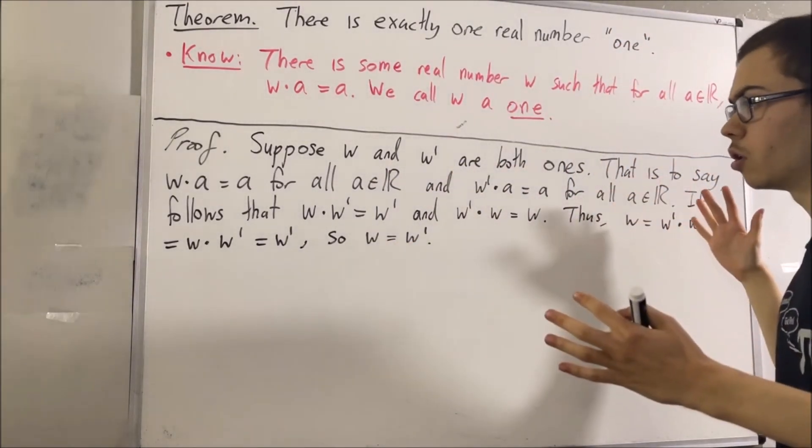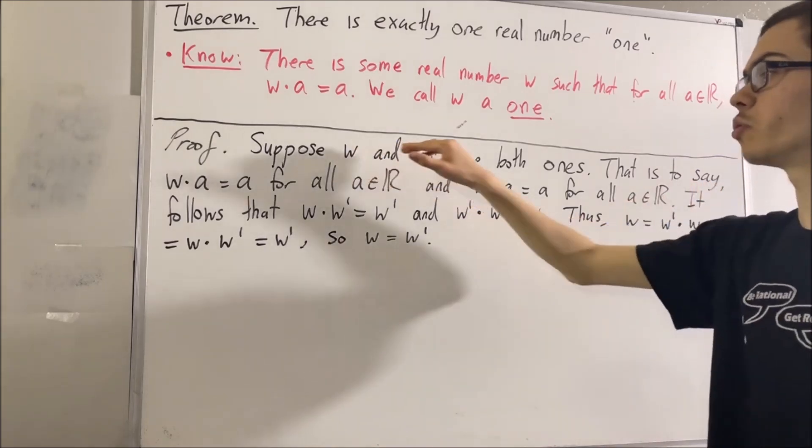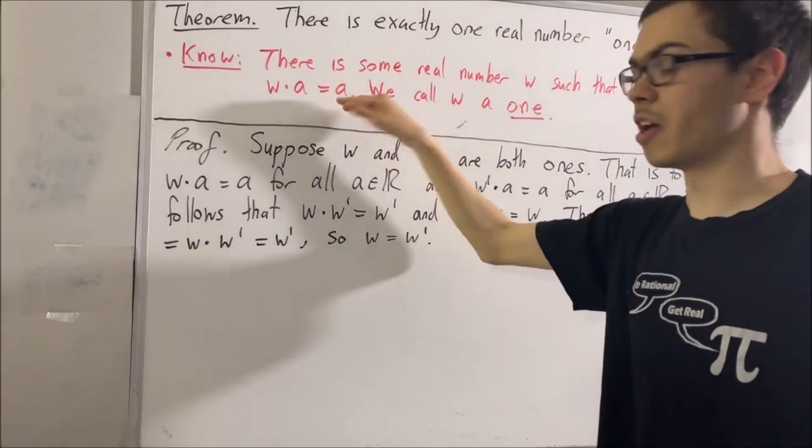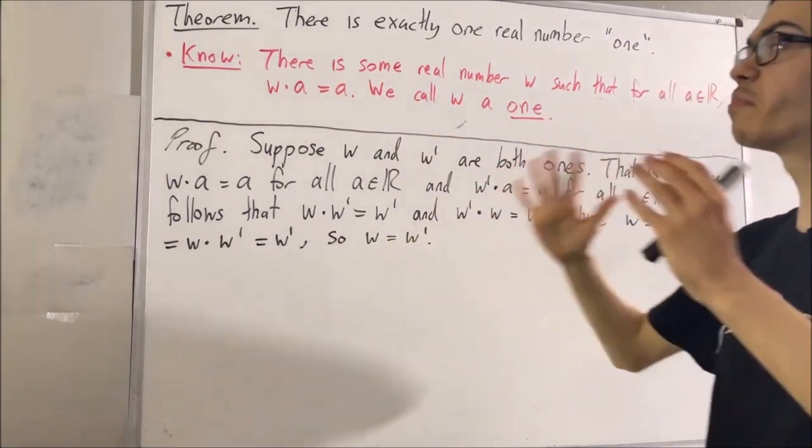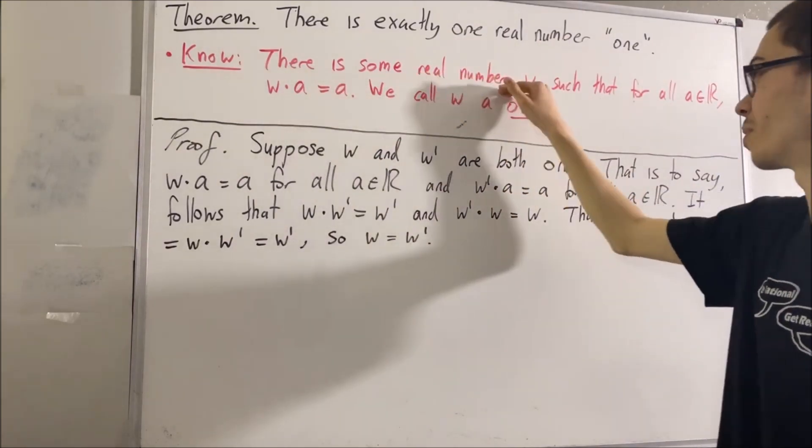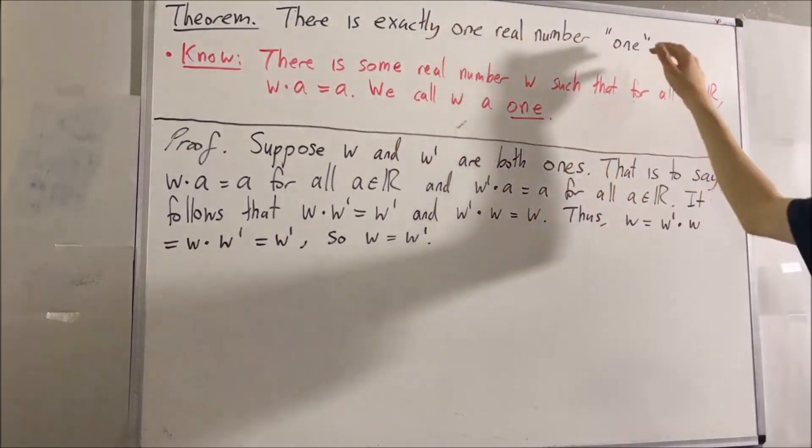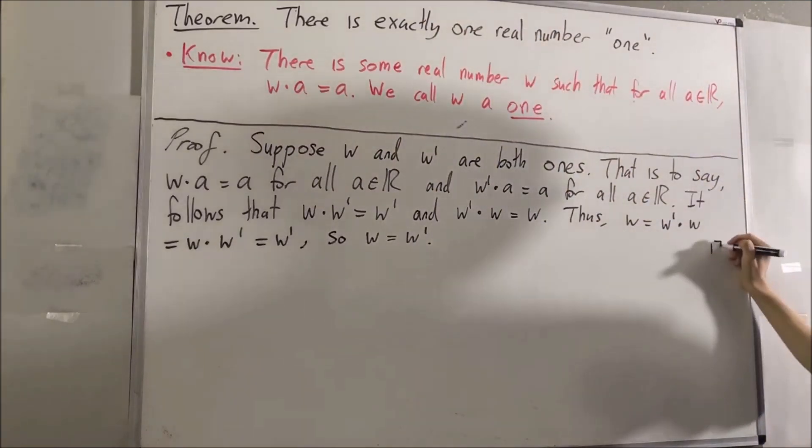And so putting this all together, we gave ourselves two real numbers w and w prime that satisfy this statement, and we proved that they must be equal to each other. And so this proves that there is exactly one real number that satisfies this statement. In other words, there's exactly one real number one. So this completes the proof.